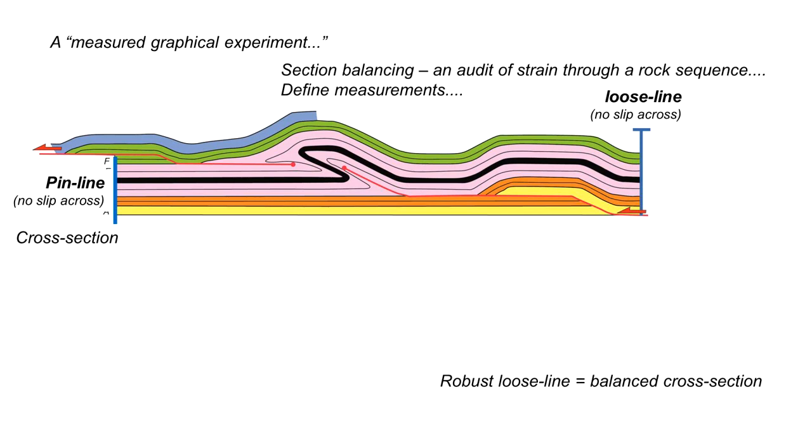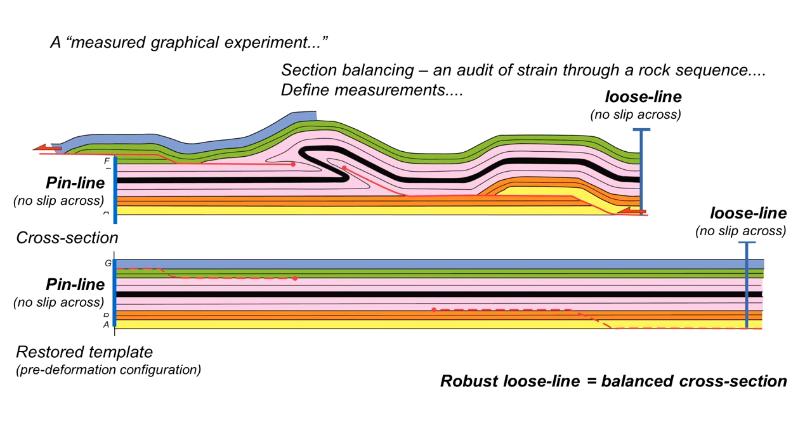And typically that the reconstructed loose line is vertical we can call it robust and the cross section therefore is balanced. So we have to be able to go from the upper state to the lower state. How in practice do we do this?